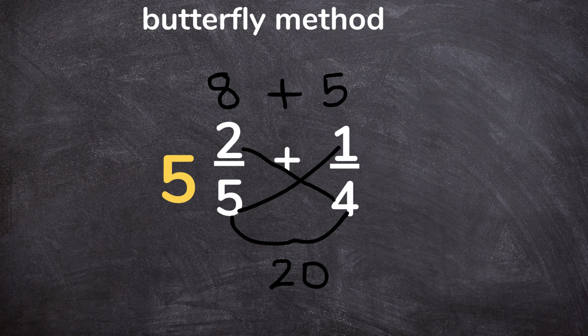So on top we have 8 plus 5, and then to find the denominator you will multiply the two denominators together. So you will do 5 times 4, that is 20.